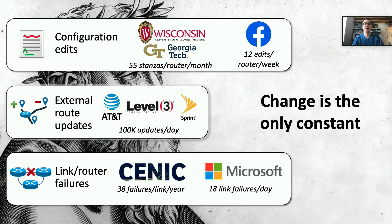Finally, links and routers fail frequently, causing changes in the network topology. In California's Research and Education network, studies have shown that each link fails tens of times per year. And in Microsoft's data centers, studies have shown over a dozen links fail each day.